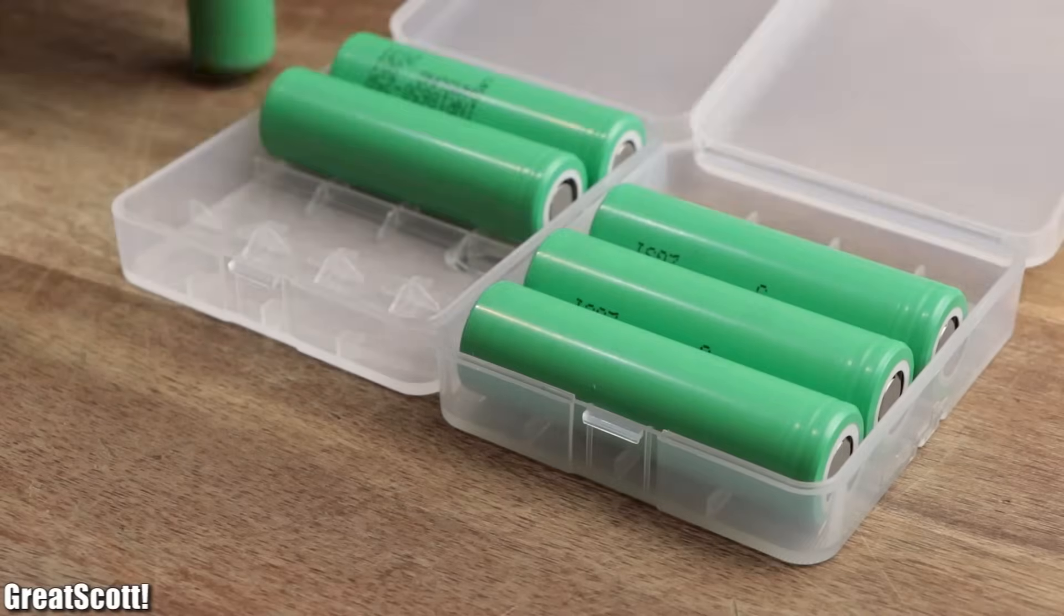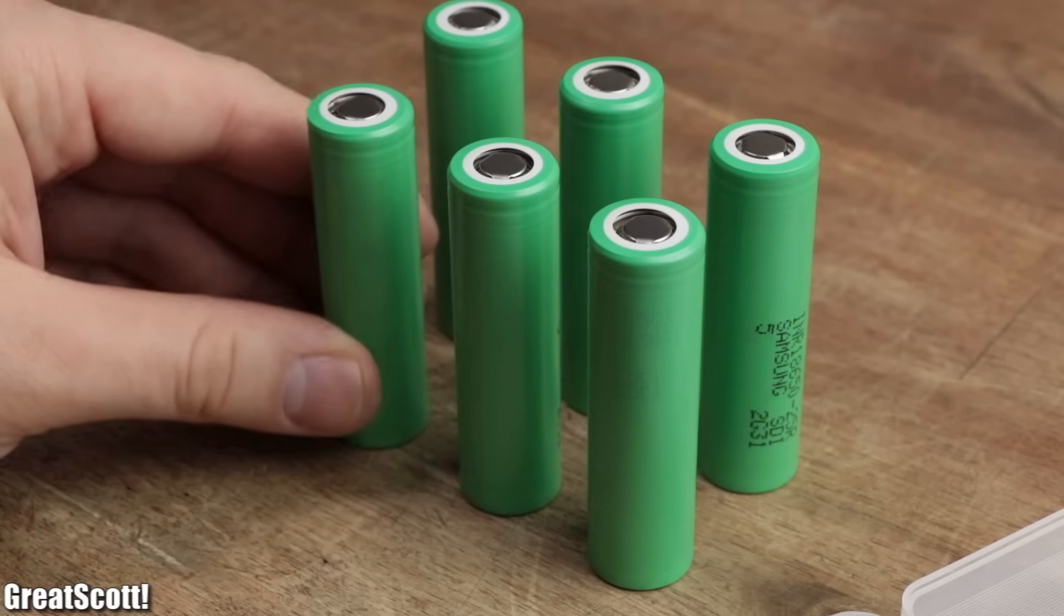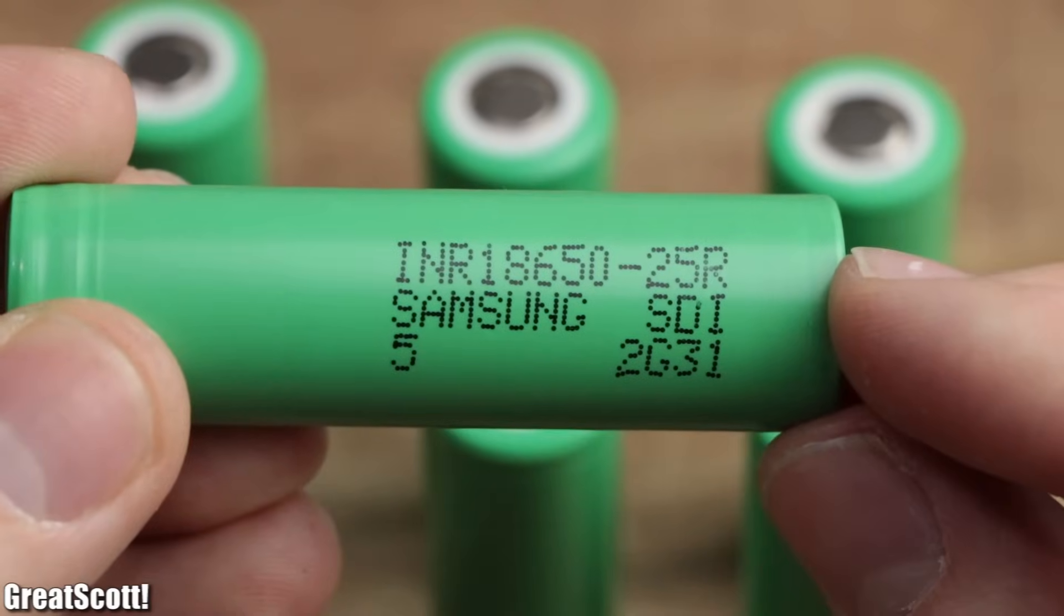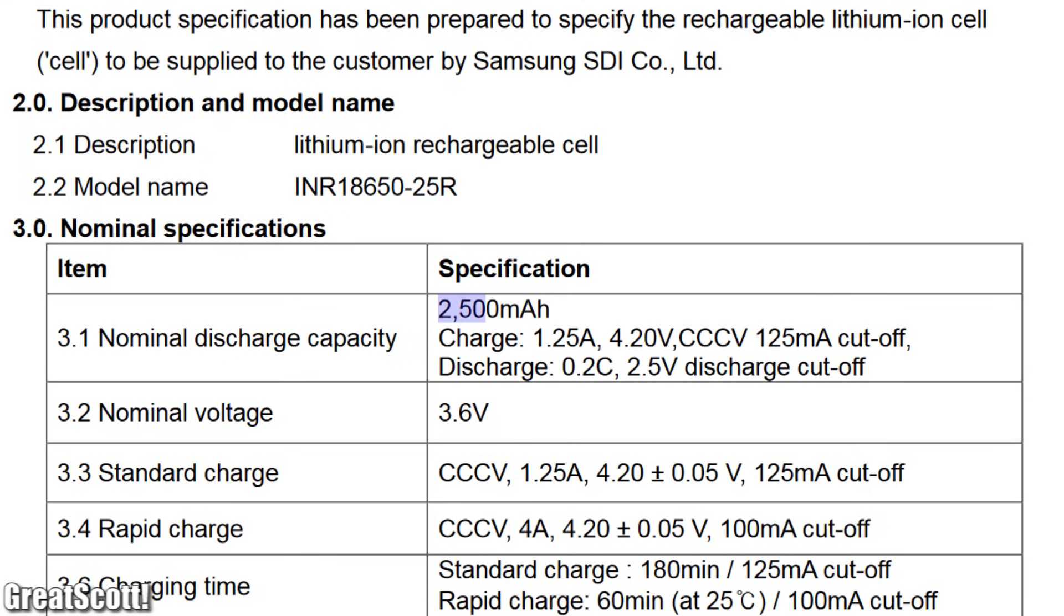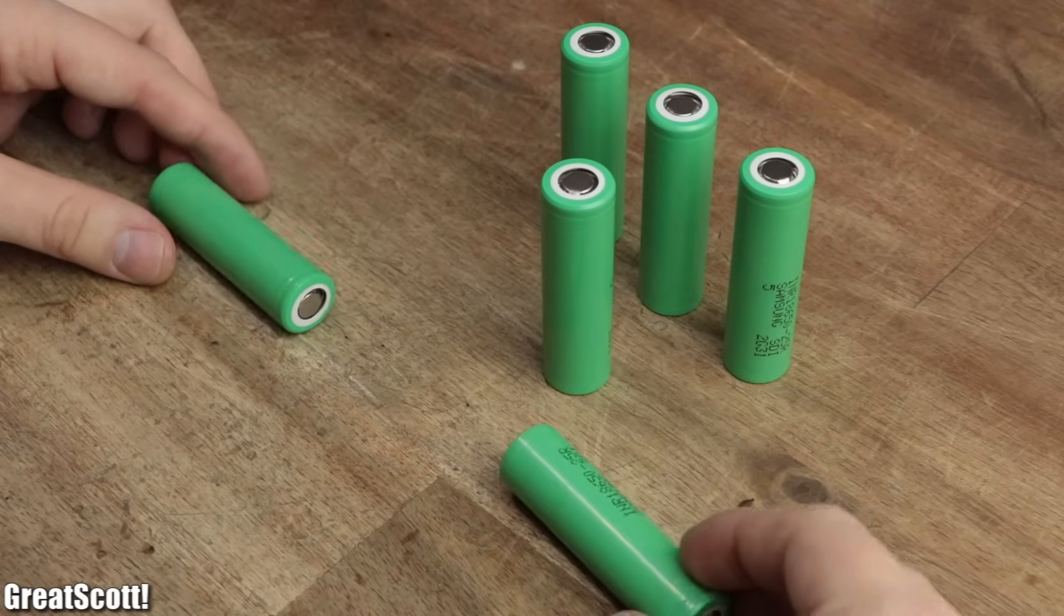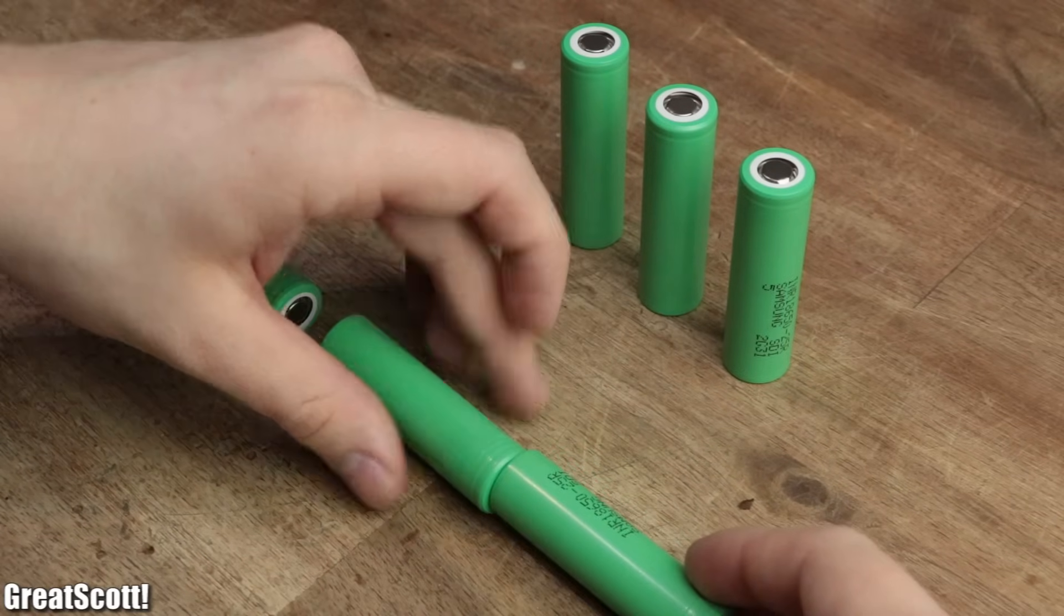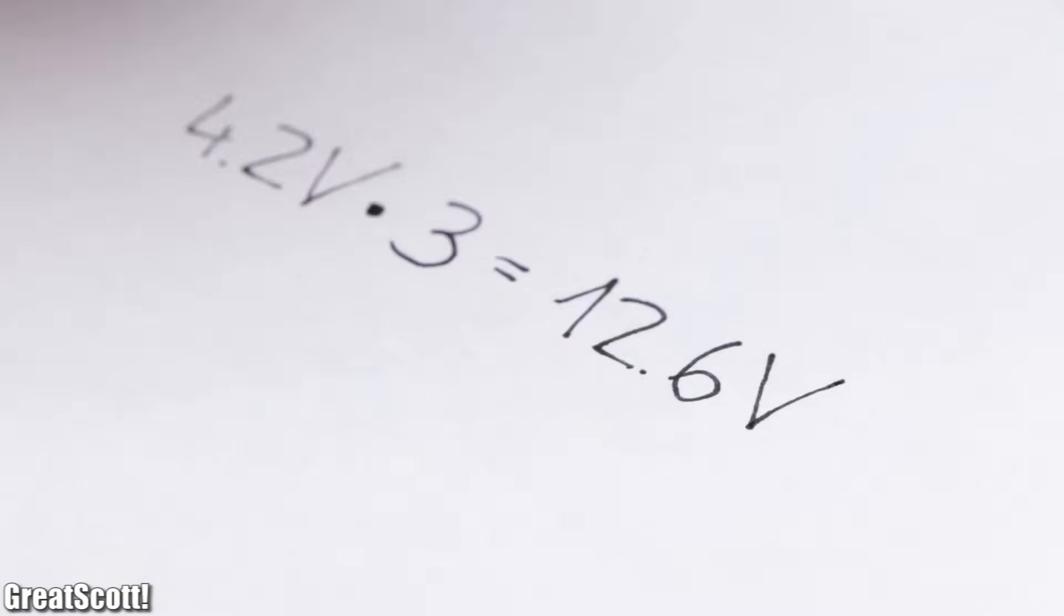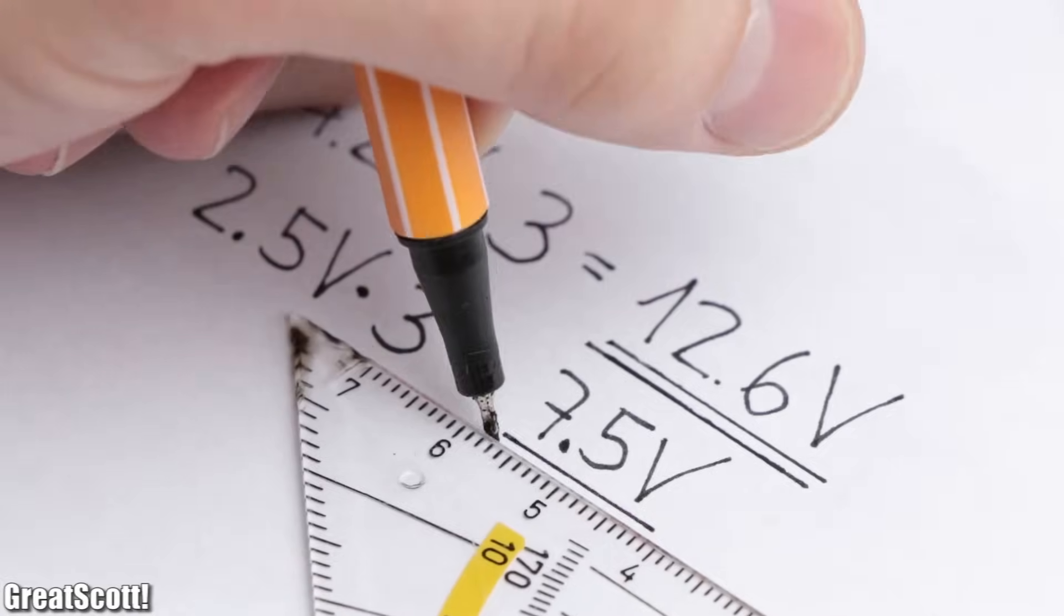The six lithium-ion cells that will convert into a battery pack are INR 18650-25R with a capacity of 2500 mAh each. To get close to the required 12 volts of the LED strip, I need to place three of them in series to create a voltage range of 12.6 volts when fully charged and 7.5 volts when completely discharged.